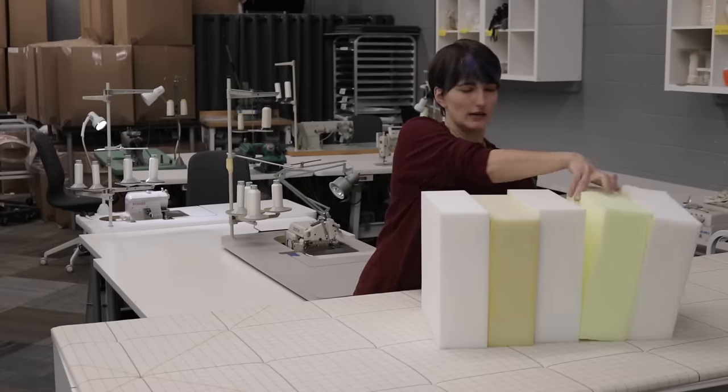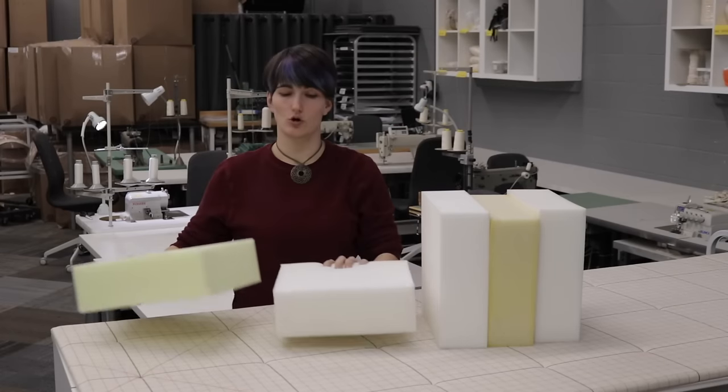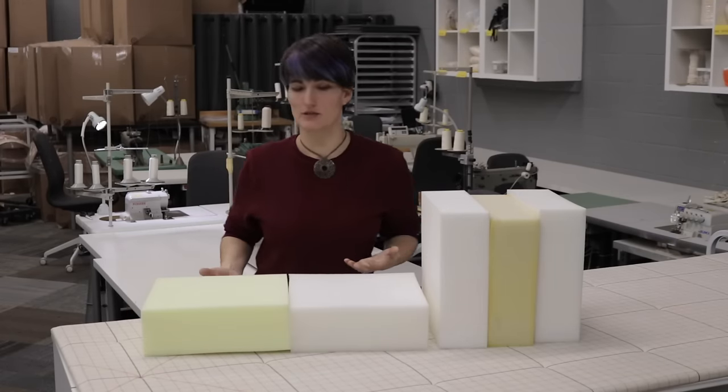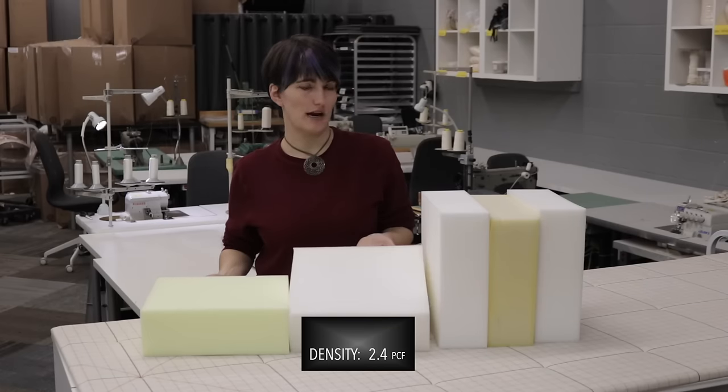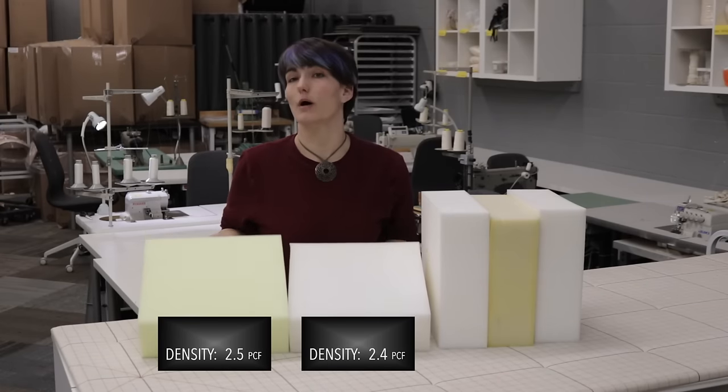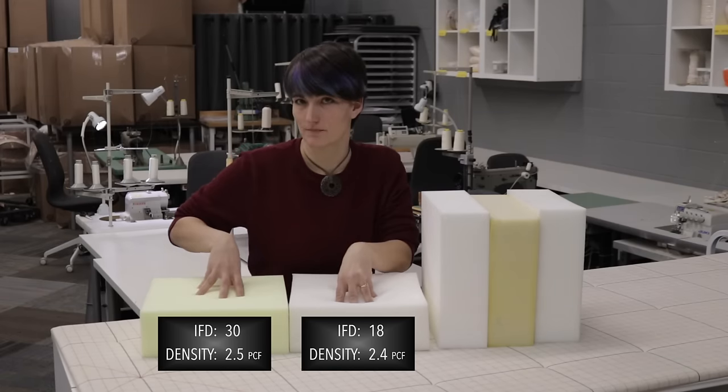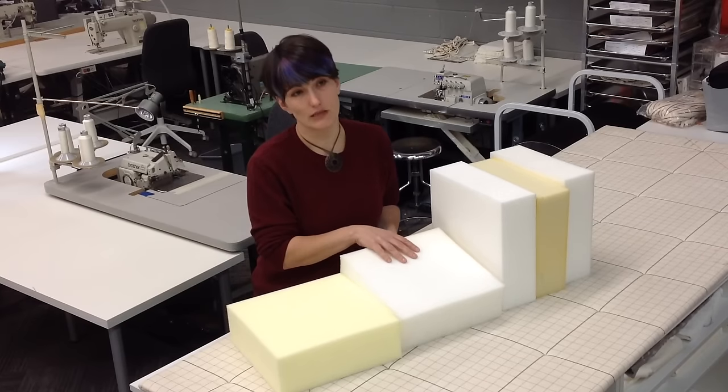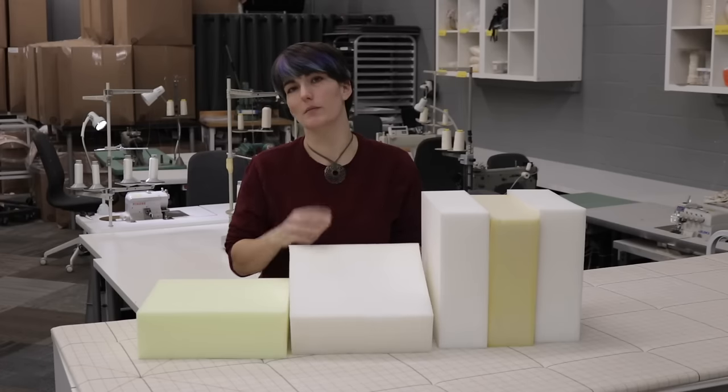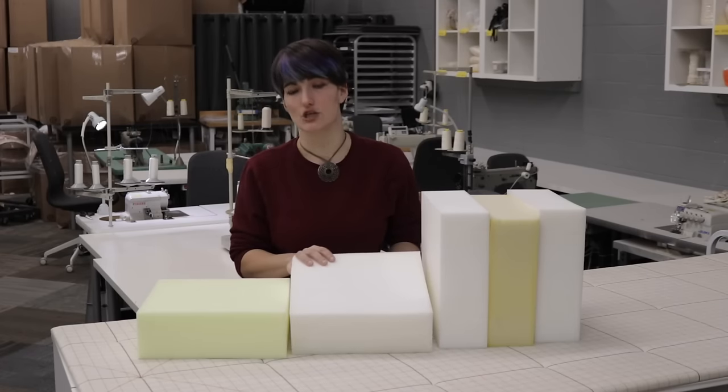On the other hand, two foams may have a very similar density, 2.4 pounds and 2.5, but one may have a much lower IFD, 18 versus 30. So while this foam has a relatively high density, it's probably too soft to use in a seat cushion.